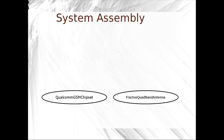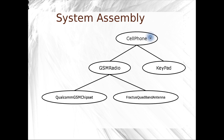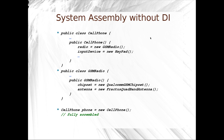Consider making a cell phone. We've got chipsets for the communications, an antenna, and this forms a GSM radio. We've got a keypad, and we've got ourselves a cell phone. Here's a system assembly without dependency injection. We've got a cell phone, a radio initialized as a new GSM radio, and an input device as a new keypad. The radio has two components: chipset equals new Qualcomm chipset, and antenna equals new Fractus Quad-Band antenna. Then we just make a new cell phone — it's fully assembled.